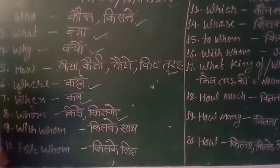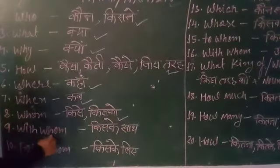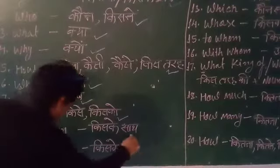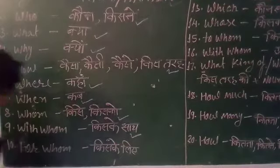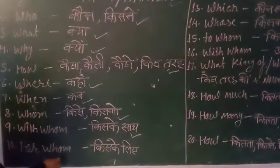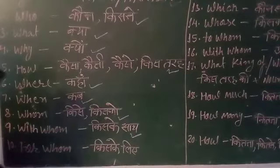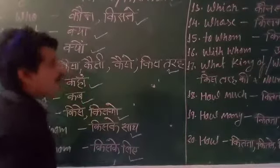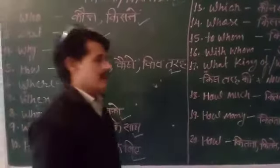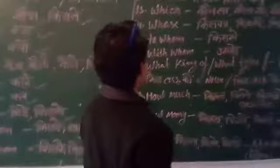The next word is 'With whom' — 'With whom' means Kiske Saath. Next word is 'For whom' — 'For whom' means Kiske Liye. 'For' means Liye, and 'Whom' means Kiske, Kiska, Kiske.